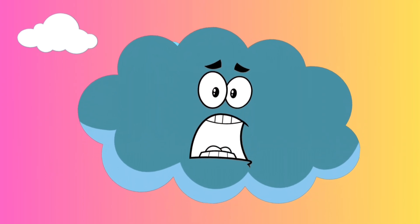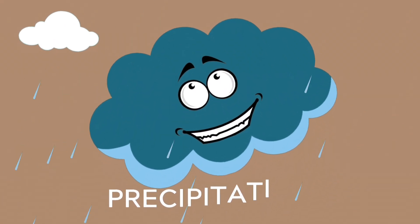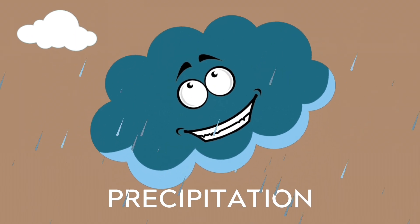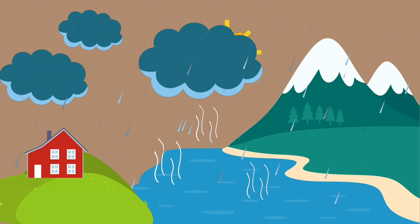More and more water droplets keep joining the cloud, making it bigger and heavier and grumpier until the cloud just can't hold it anymore. It lets go of all that water, and down comes the rain. That's called precipitation.